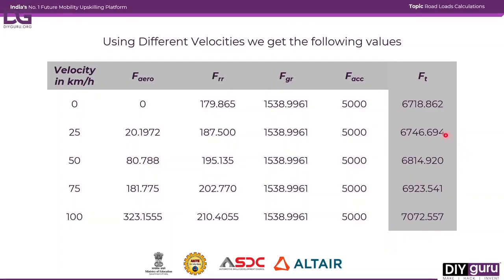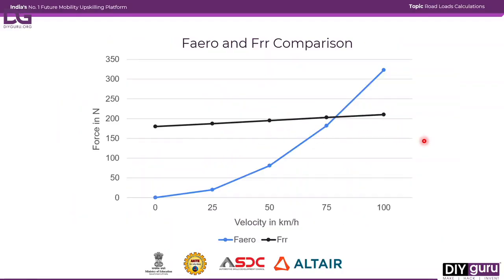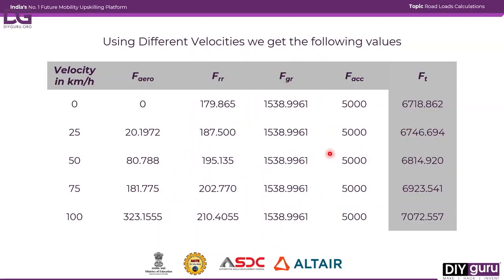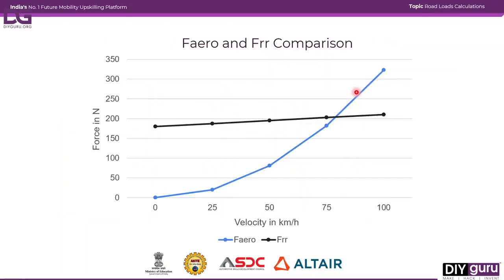The overall tractive force increases because aerodynamic and rolling resistance forces increase with velocity. In the line chart, you can see aerodynamic drag increasing drastically with speed, while rolling resistance increases with a much smaller slope. Gradient resistance and acceleration force are not plotted since they are constant. In the next video, we will go through wheel torque and power required, and also see how to do these calculations in Microsoft Excel.